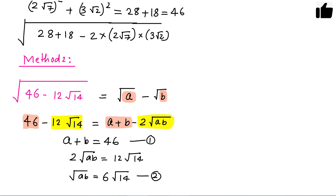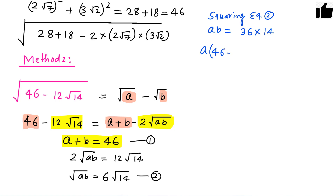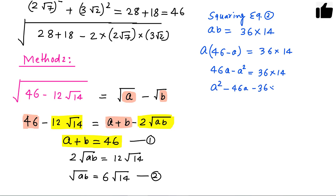Squaring the second equation gives us ab equals 36 times 14, which is 504. From the first equation, b equals 46 minus a. Substituting into ab equals 504, we get a times (46 minus a) equals 504. Expanding: 46a minus a² equals 504, which rearranges to a² minus 46a minus 504 equals 0. This is a quadratic equation.